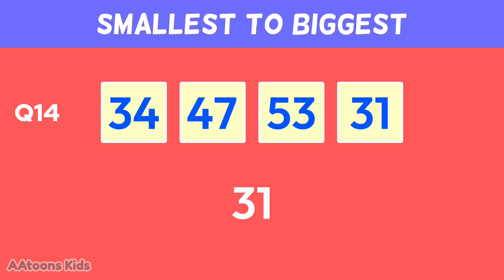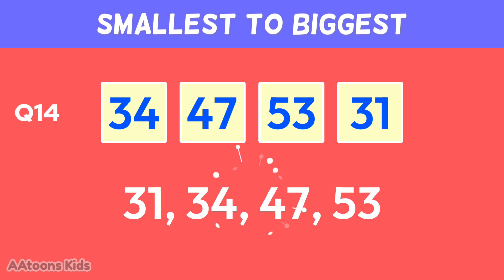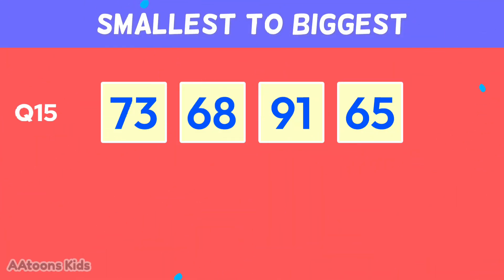Arrange these numbers from smallest to biggest: thirty-one, thirty-four, forty-seven, fifty-three.